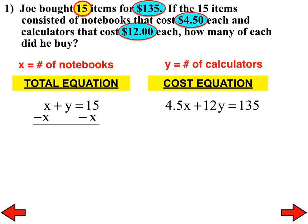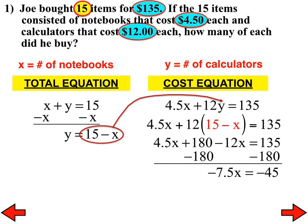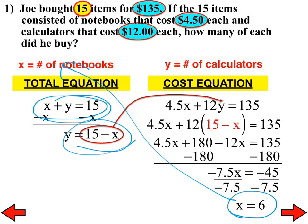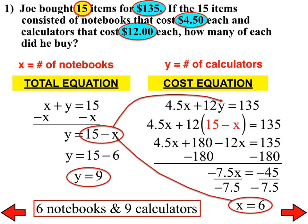You could use either elimination or substitution. I'm going to use substitution on this one. A lot of times, I do think substitution is easier. I think most of you ended up using elimination. But it does not matter. So using substitution, I would have something like this. I use a distributive property, combine like terms, subtract 180 from both sides, divide both sides by negative 7.5, and I get x equals 6. And 6 being x, that tells me that's how many notebooks we have. Then it's easiest to go back to here or here to figure out how many calculators there would be from there. But obviously, there would be 9. Make sure you answer the question. He bought 6 notebooks and 9 calculators.